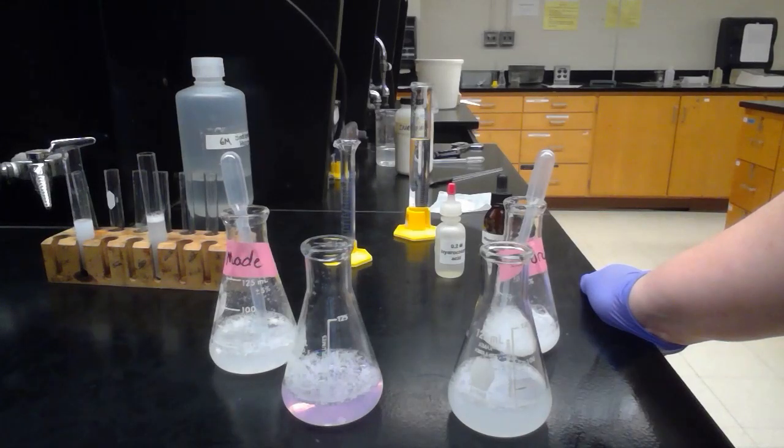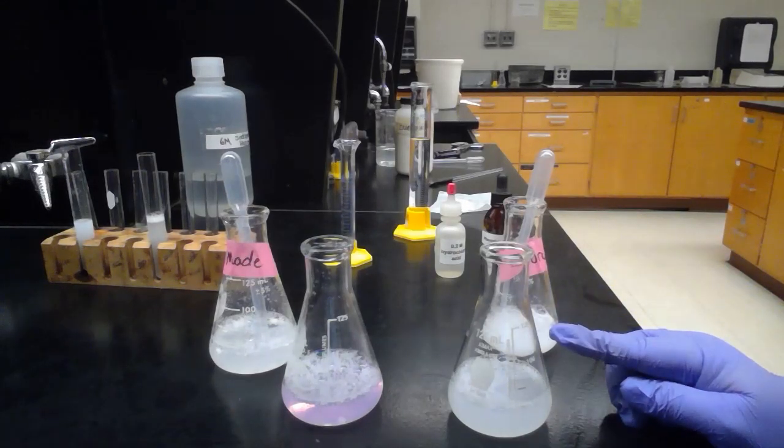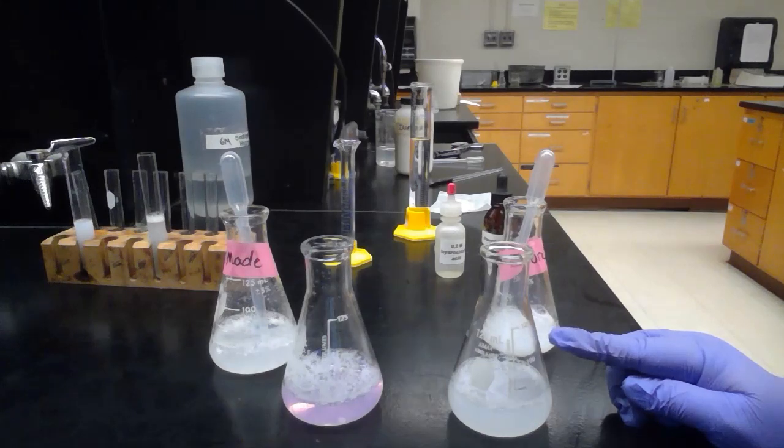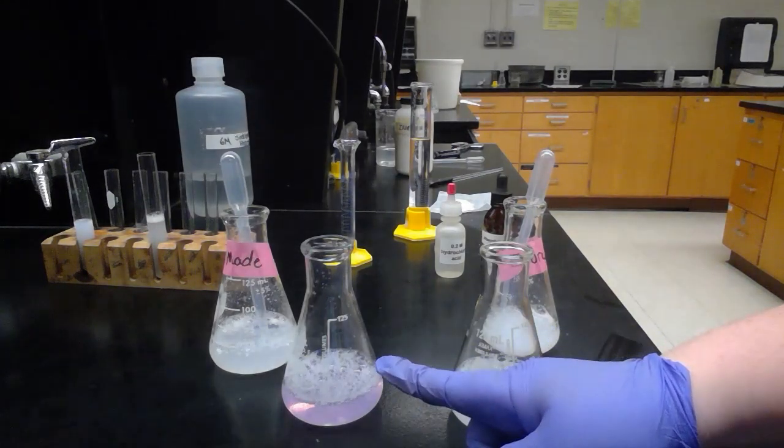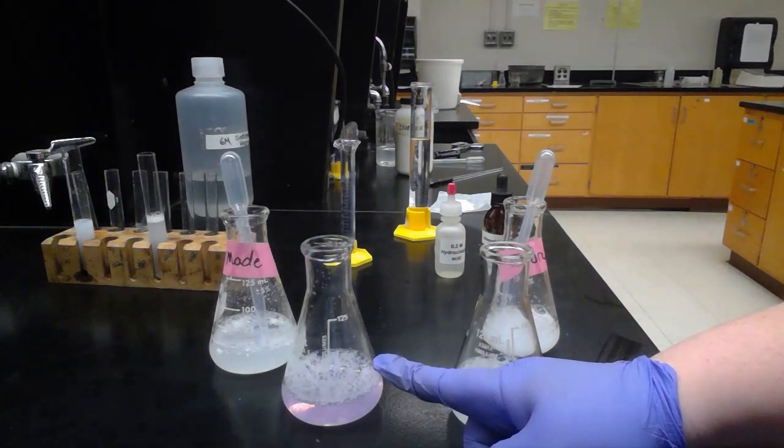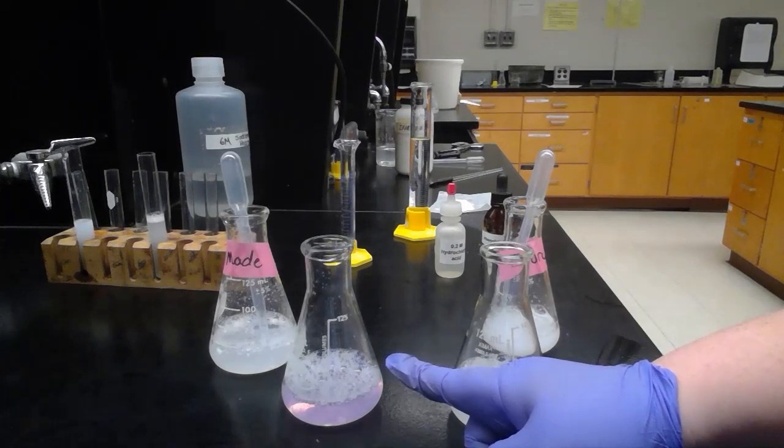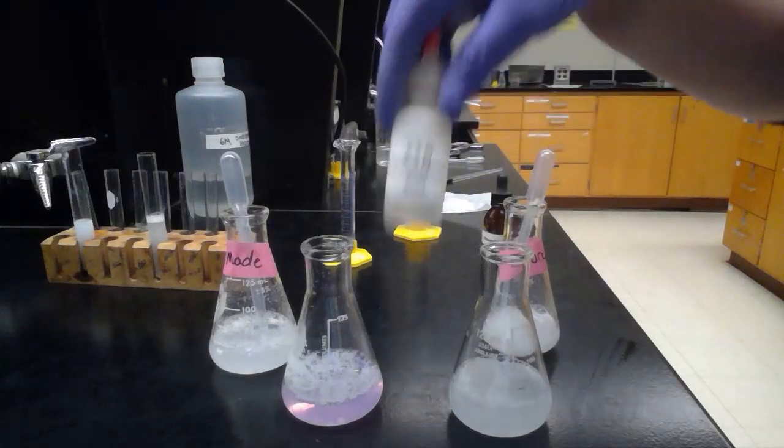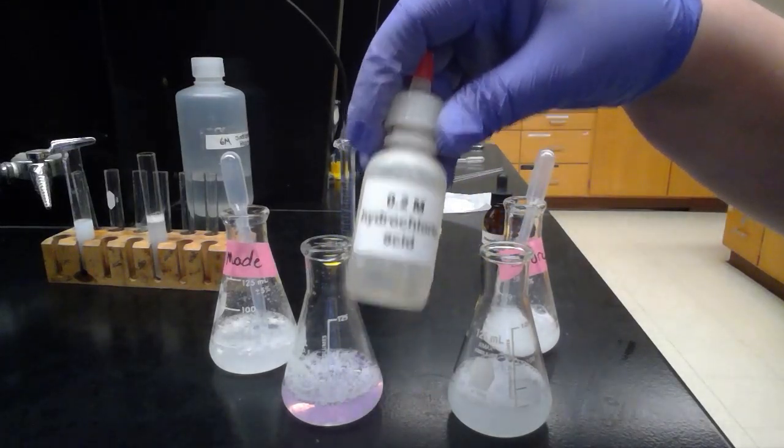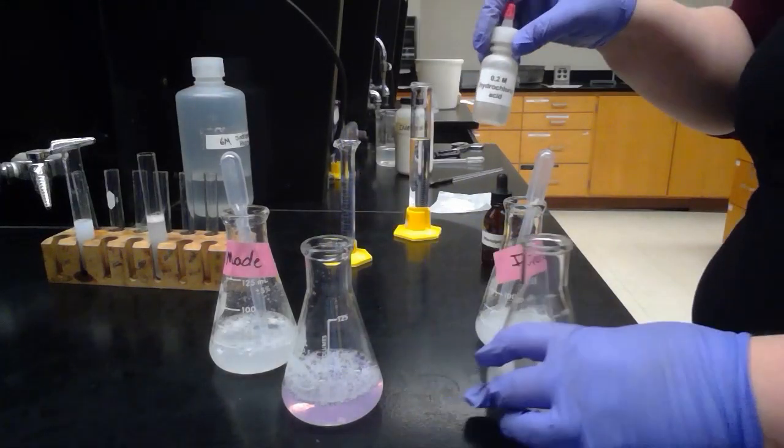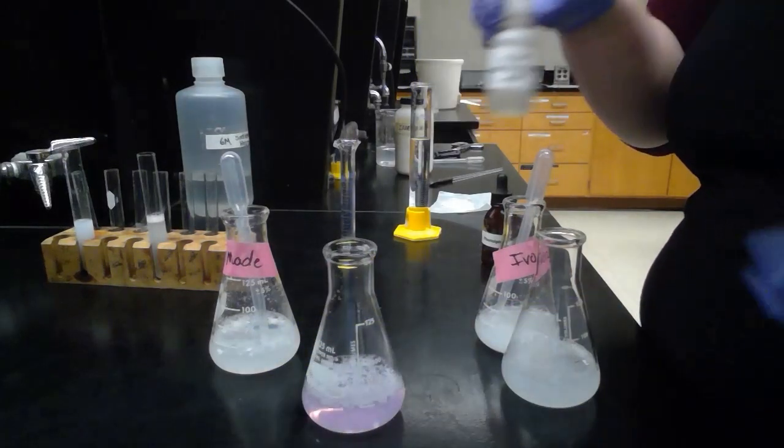We didn't have to add any hydrochloric acid to neutralize the ivory soap. But now we're going to try to neutralize our sample or our made soap by adding one drop at a time of our 0.2 molar hydrochloric acid, and seeing how many drops it takes to get this pink color to disappear.